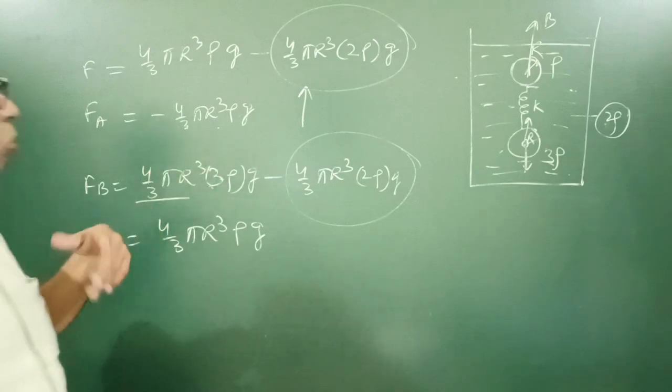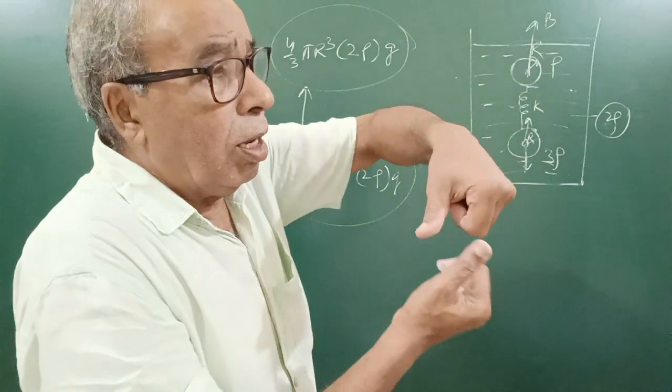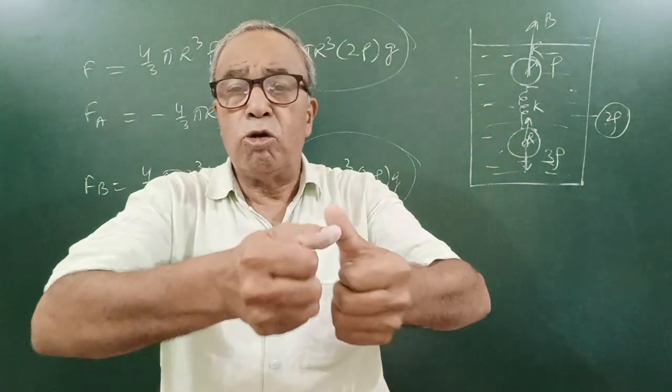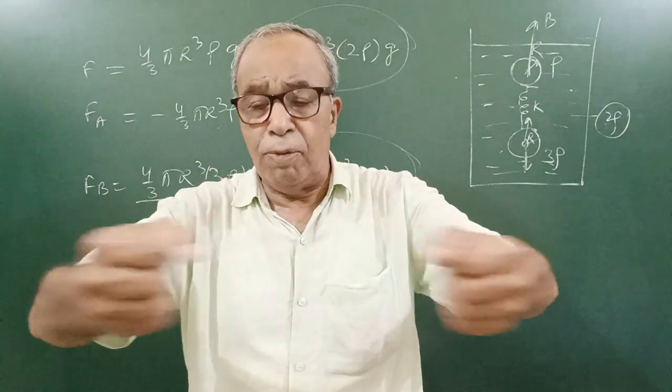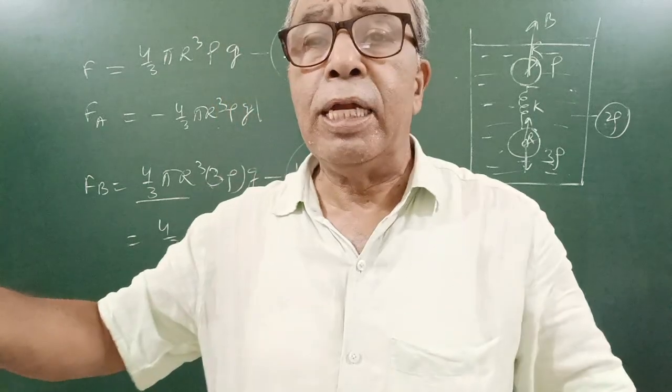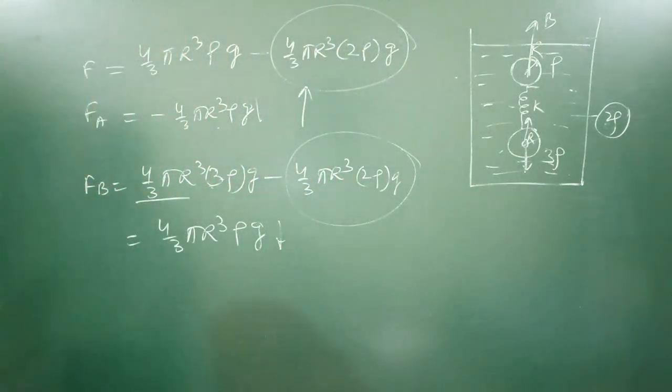So the net force, you know, this is upward and this is downward. So the string is pulled upward by this force, equal and opposite force. If you want to give elongation, you have to apply equal and opposite force, only then it will be in equilibrium.